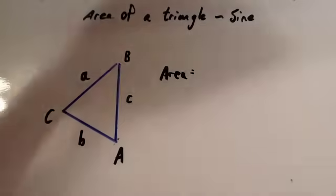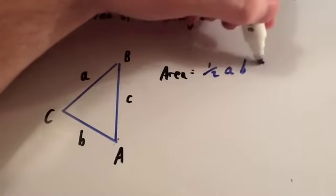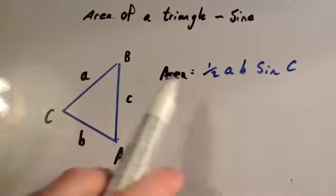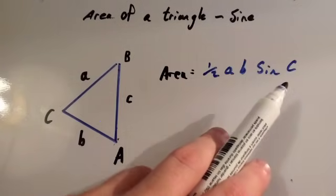The area of a triangle using sine is a half a, little a, b, sine big C. And what this is saying is you multiply a and b together and half it, and multiply by the sine of the angle C.